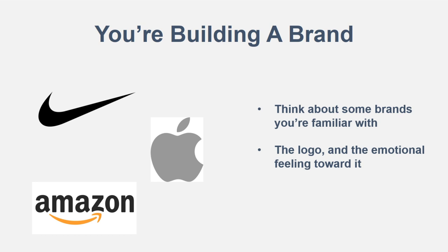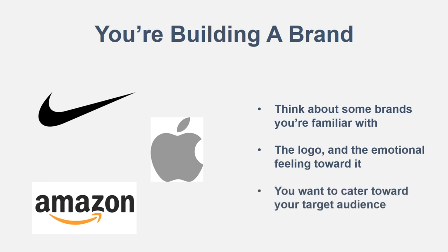You look at Apple — once again, very sleek, very simple. You understand it just from seeing their logo and their imaging. It's very obvious what they're doing with their brand. Same thing with Amazon — they're going for that smiley face with the arrow, meaning everything from A to Z is on Amazon. That's their whole point. And you also want to cater toward your target audience, which I'll go over with a more specific in-depth example later in the presentation.